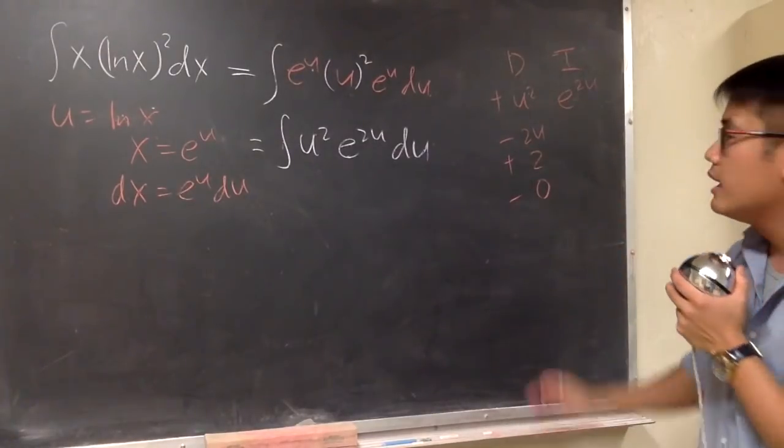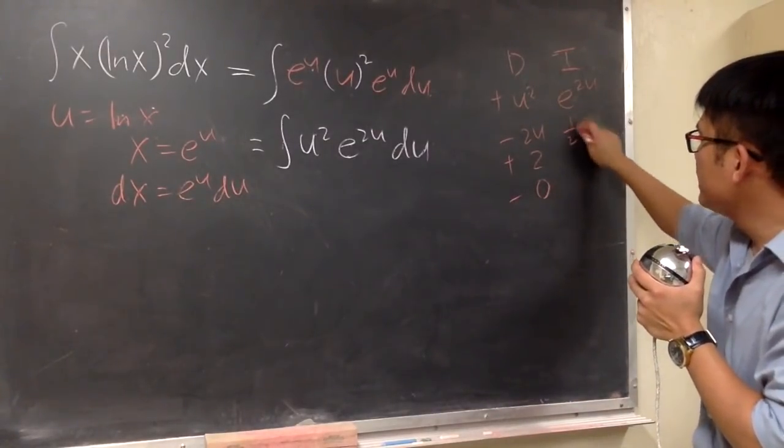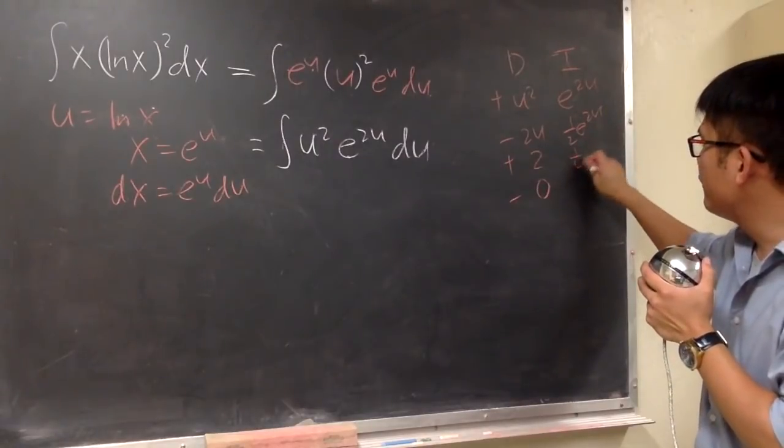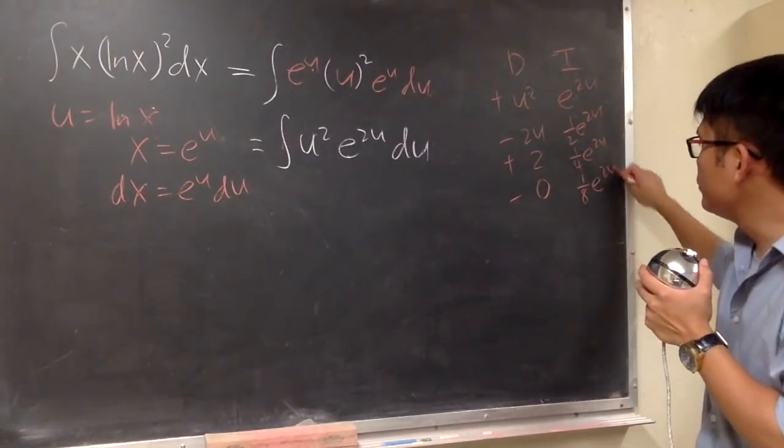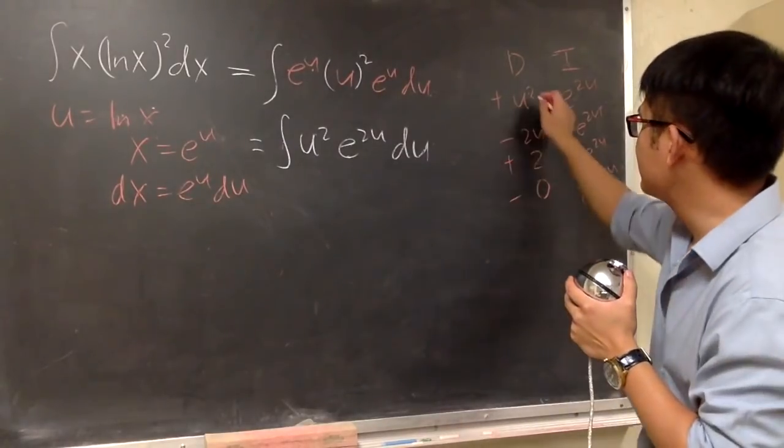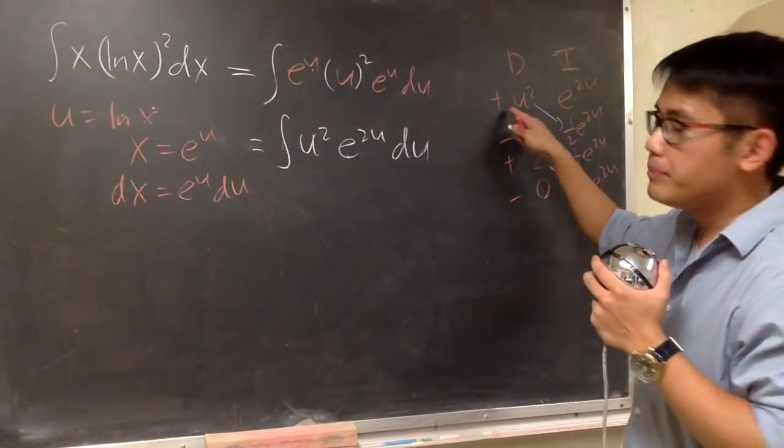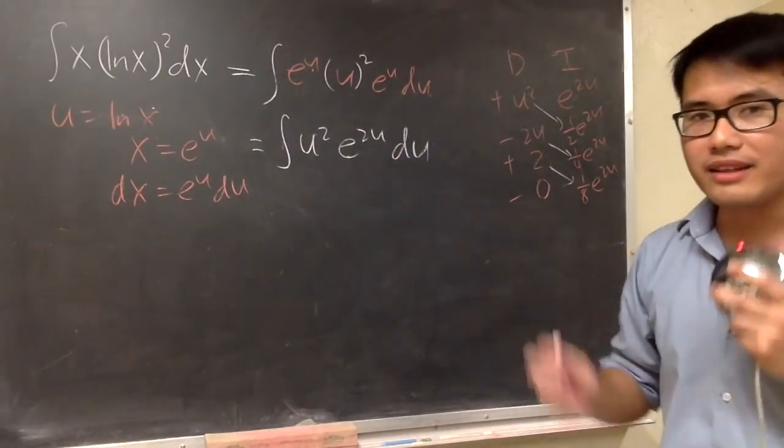This is the best case, right? And now let's integrate e to the 2u. We get 1 half e to the 2u. And then 1 over 4 e to the 2u and then 1 over 8 e to the 2u. And we are so ready because the diagonal is the answer, right? And then be sure to account for the plus minus on the side.